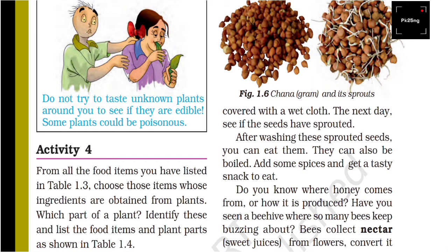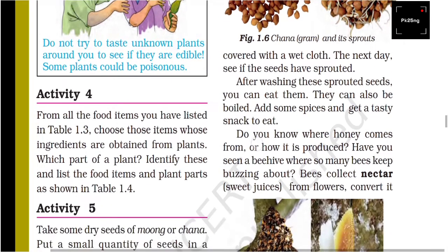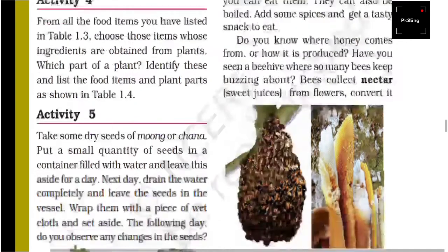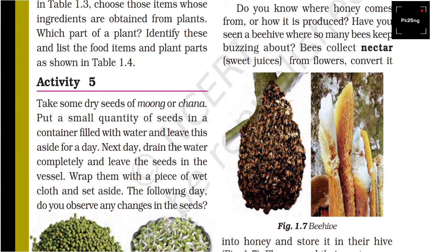From all the food items you have listed in Table 1.3, choose those items whose ingredients come from plants. Identify which part of the plant they come from, and list the food items and plant parts in Table 1.4.